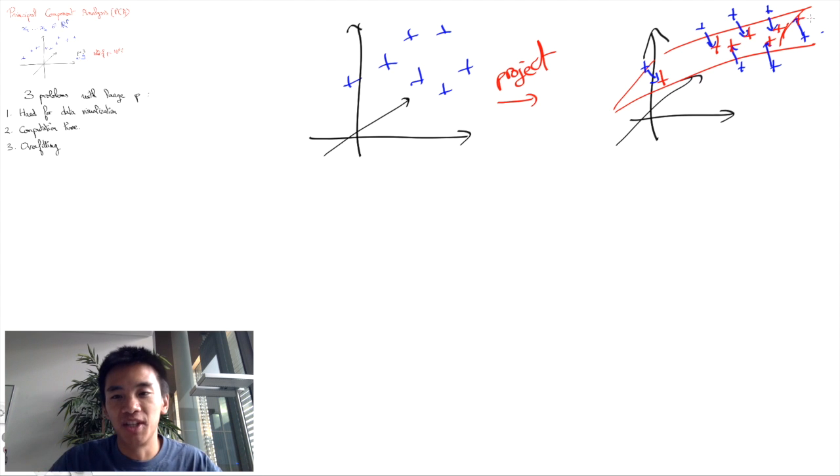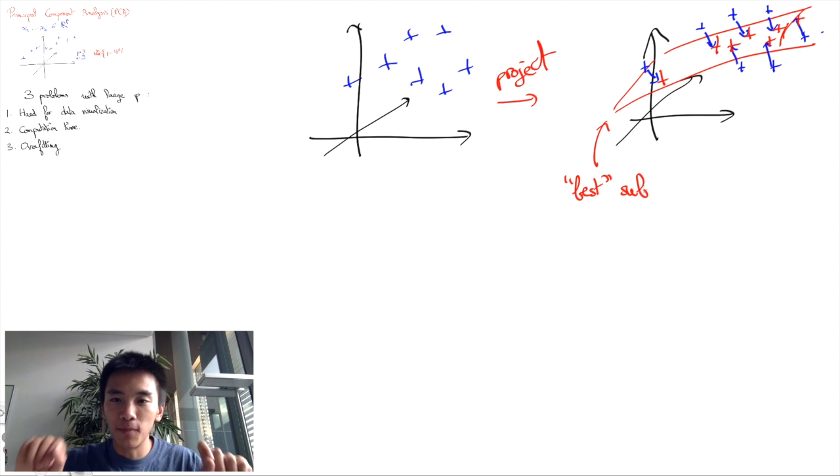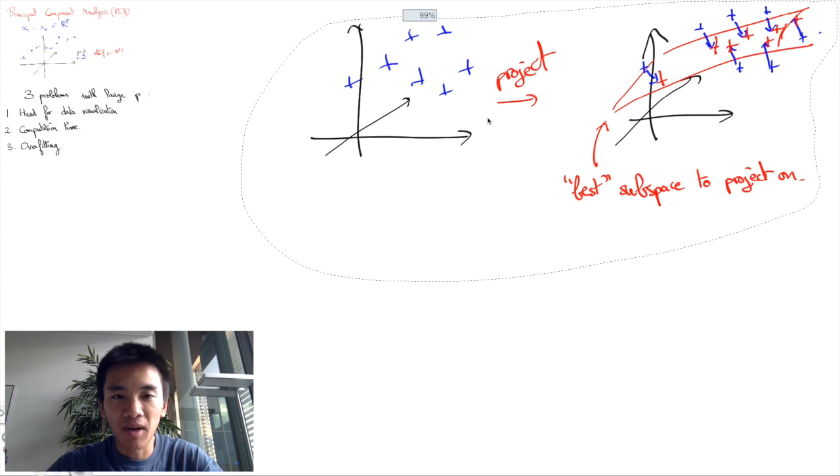To do so, we will typically be interested in the directions in RP along which the data varies the most, and this means that we first need to compute the so-called covariance matrix of the data.